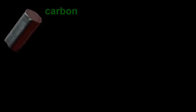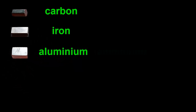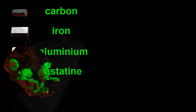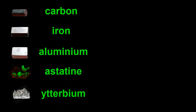You probably have already heard of some of them, like carbon, iron and aluminium — or aluminum if you're American. But maybe not astatine or ytterbium. With so many elements there's a lot of names to remember.